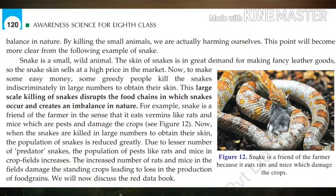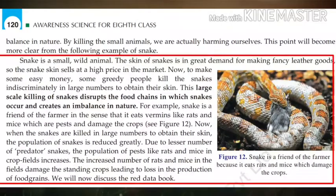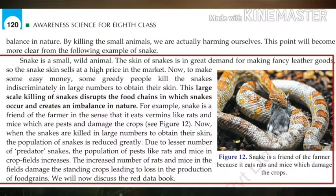By killing small animals, we are actually harming ourselves. For example, the skin of snakes is in great demand for making fancy leather goods, so snakes' skin sells at a high price in the market. To make easy money, some greedy people kill snakes indiscriminately in large numbers to obtain their skin. This large-scale killing of snakes disrupts the food chains in which snakes occur and creates an imbalance in nature.